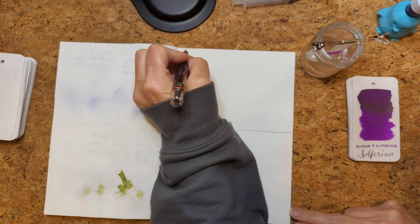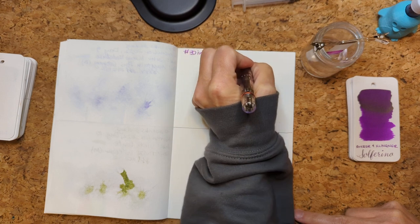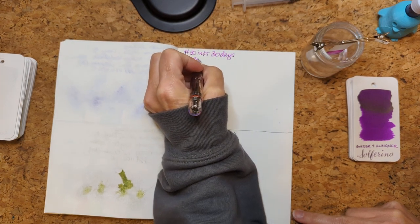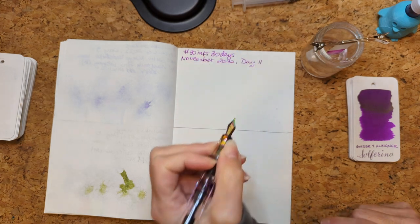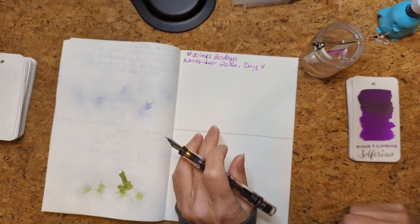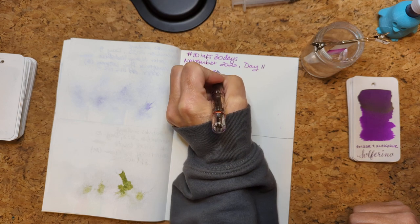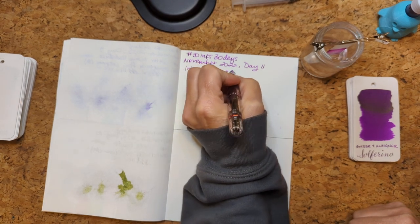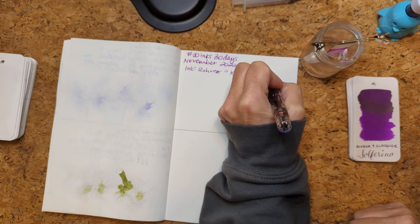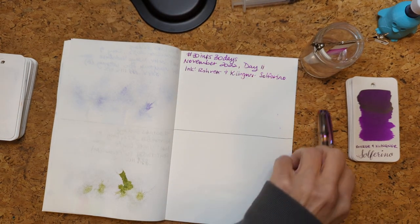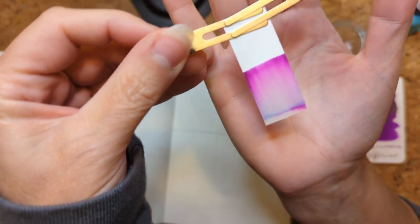Get this going and write some stuff. So how I usually do this: 30 inks 30 days, November 2022, day 11. Ink, whoops, Rohrer and Klingner Solferino. Before I finish writing this I'm gonna take this out of here. Look at that, pretty basic and I love it.